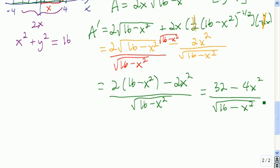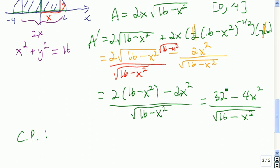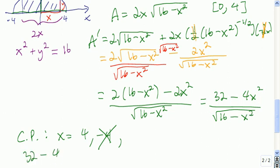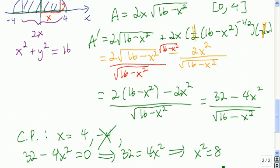The critical points of a are the values that make a prime either 0 or undefined. a prime is undefined if x equals 4, since 4 is in the domain of the original function, so we call it a critical point. We also need to find where a prime is 0: 32 minus 4x squared equals 0, so x squared equals 8, giving x equals the square root of 8 or negative square root of 8. The square root of 8 is in the domain, but negative square root of 8 is not, so we only keep x equals root 8, which equals 2 root 2.